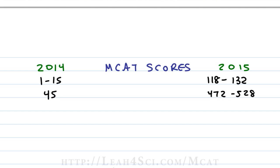For the old exam, students typically aimed for a 30 or higher to be considered competitive. For the new exam, the scale isn't yet available since there's no data on students being accepted under the new scoring system. However, a 30 on the old exam required an average of 10 points per section. Applying the same logic, a 10 per section on the new exam equals a 128, so you'll probably want to shoot for a 512 or higher to be considered competitive for the average medical school.